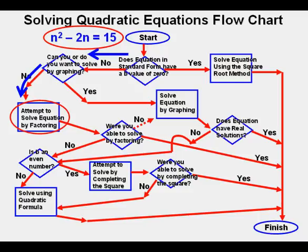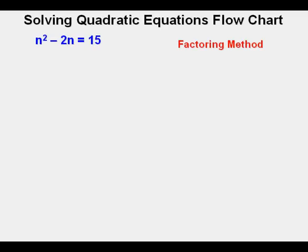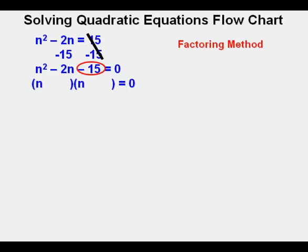If you're skilled at factoring and the equation is factorable, it may be faster to solve by factoring than by any other method, including graphing. The flowchart says 'attempt to factor' since not all equations are factorable. To solve by factoring, we need zero on one side of the equation. We subtract 15 from both sides: 15 minus 15 cancel on the right, leaving n squared minus 2n minus 15 equals zero. Now we start to find the factors. The factors of n squared are n and n. We need factors of negative 15 that add to negative 2.